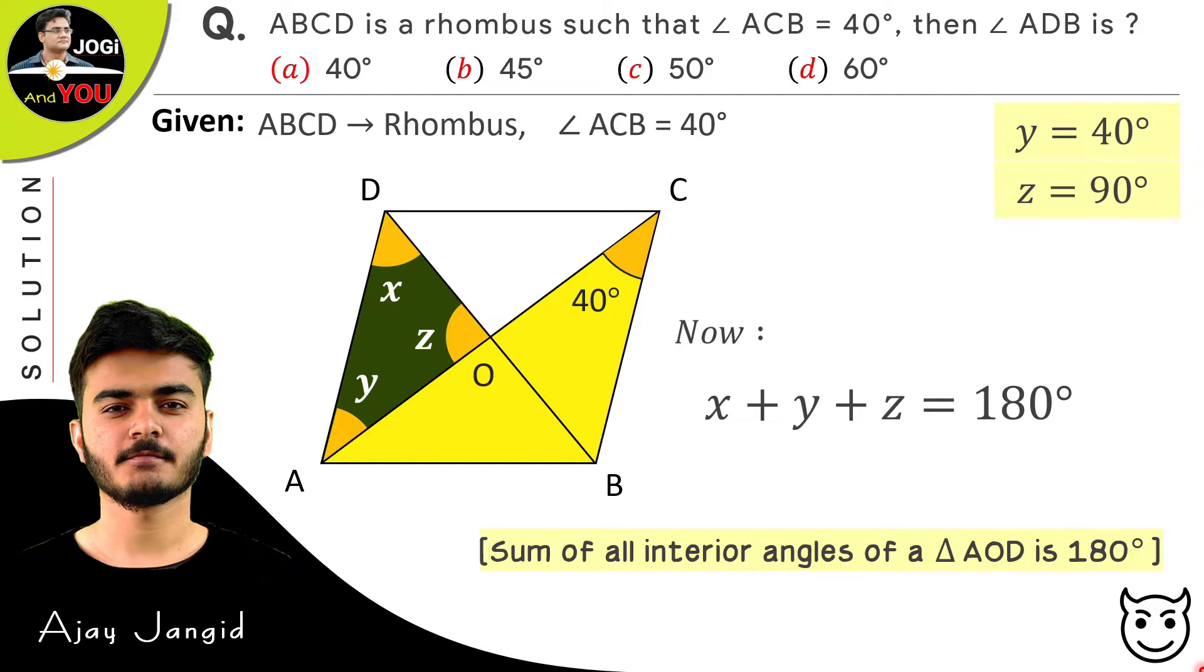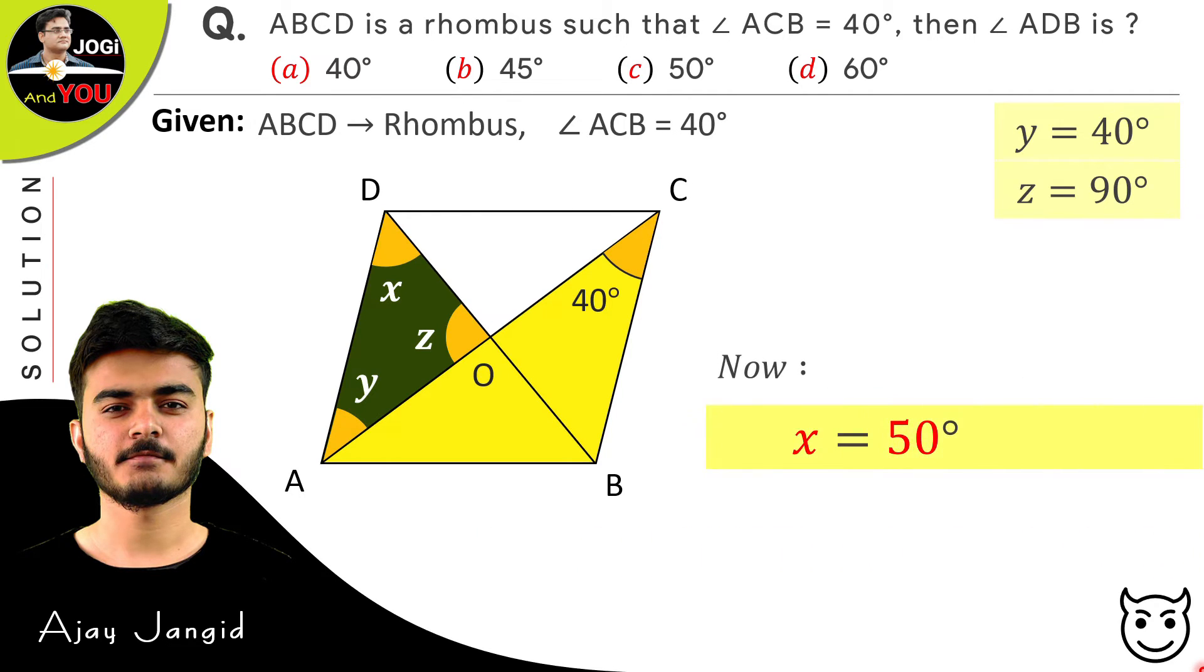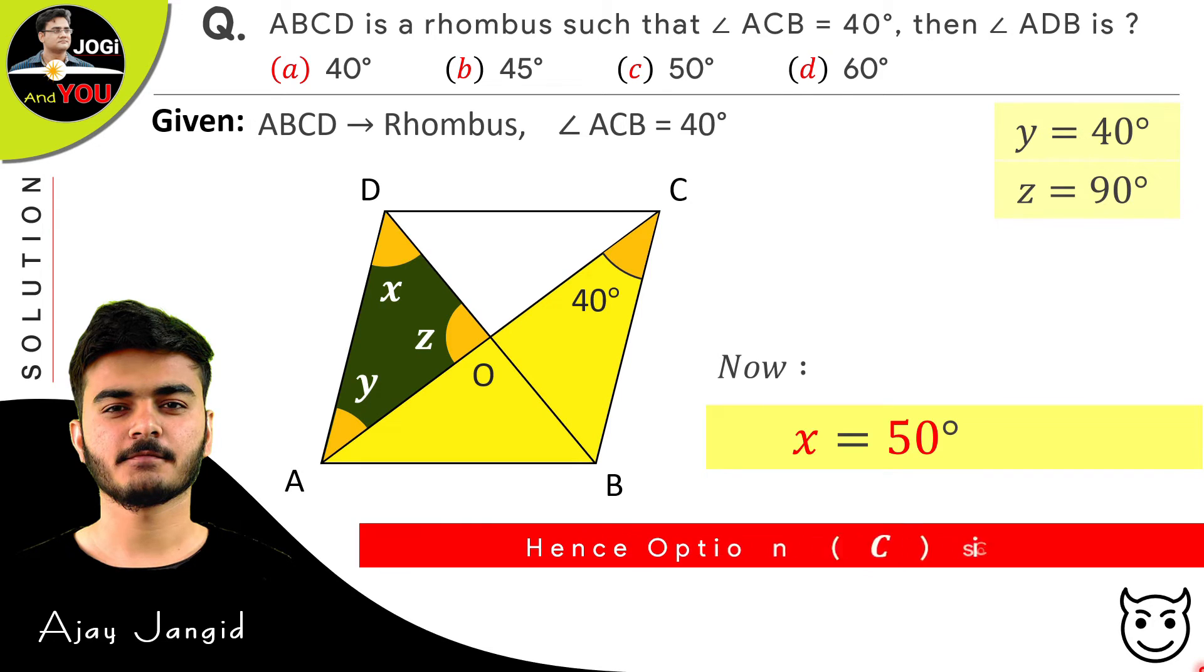So here we have Y is equal to 40 degrees and Z equals to 90 degrees. Just replace both the things and we get X plus 40 degrees plus 90 degrees is equal to 180 degrees. And after transferring all the things, we have X is equal to 180 degrees minus 40 degrees minus 90 degrees. And after calculating all this, we have the value of X is equal to 50 degrees. So the options we have in the question as A, B, C, D, the C is the correct answer among these.